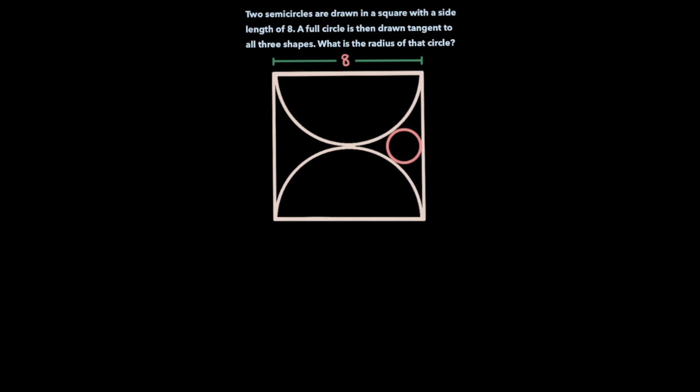In this video, we're going to be taking a look at the following problem. Two semicircles are drawn in a square with a side length of 8. A full circle is then drawn tangent to all three shapes. What is the radius of that circle?